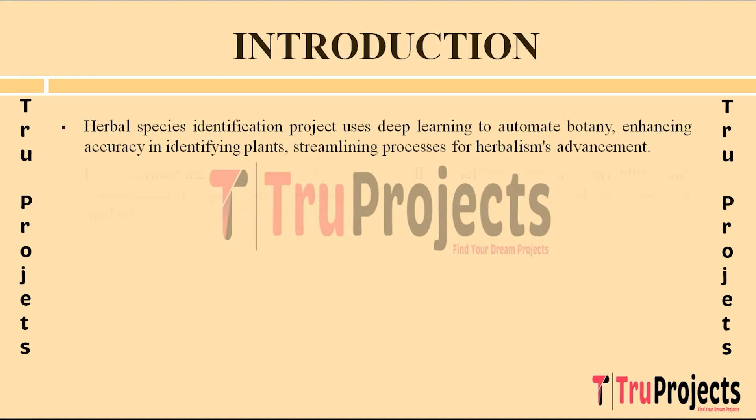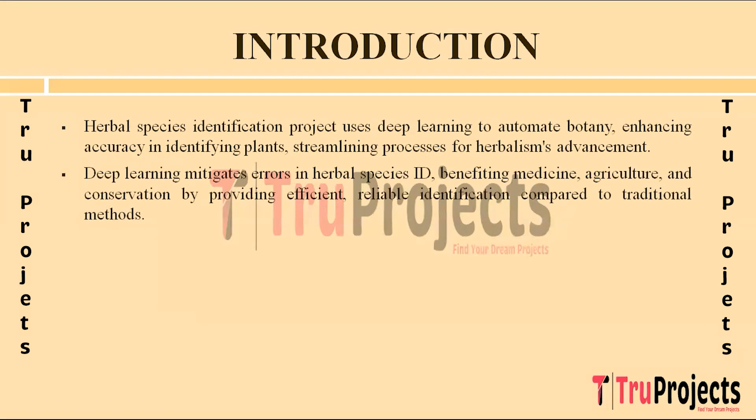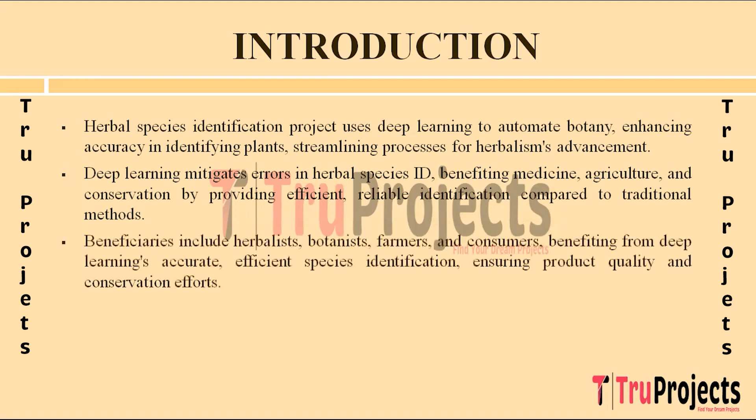Accurate identification of herbal species is crucial for numerous applications including medicine, agriculture, and conservation. However, traditional methods of identification can be time-consuming, labor-intensive, and prone to errors. By employing deep learning techniques, this project aims to overcome these limitations and provide a more efficient and reliable solution for species identification.